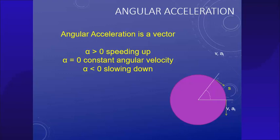If it's greater than zero or positive, it's speeding up. We can still have a constant angular velocity if alpha is zero.